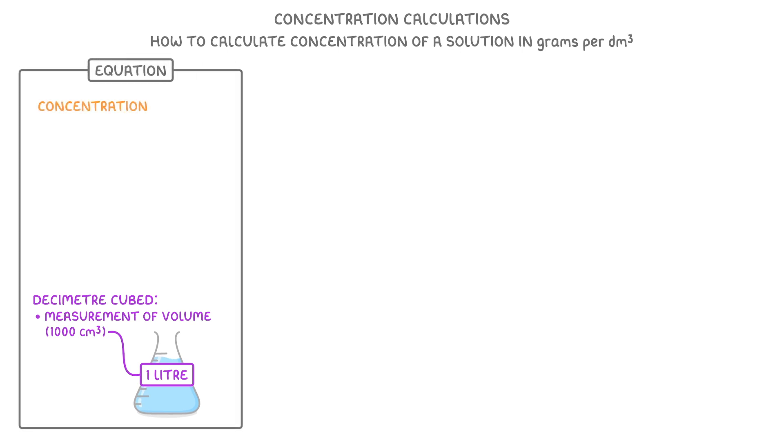Now, the equation for concentration is mass divided by volume, which we can put into a formula triangle like this, with mass being measured in grams and volume in decimetres cubed.